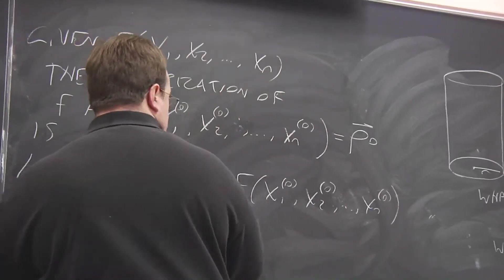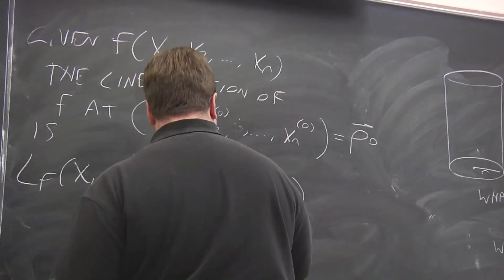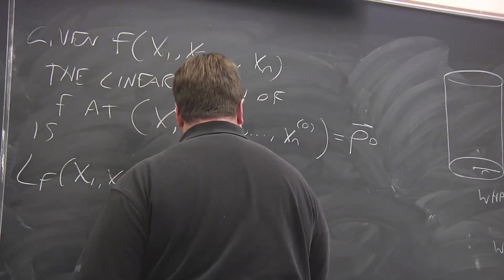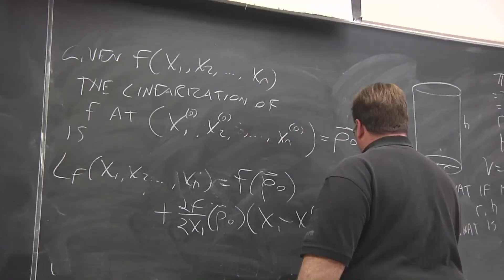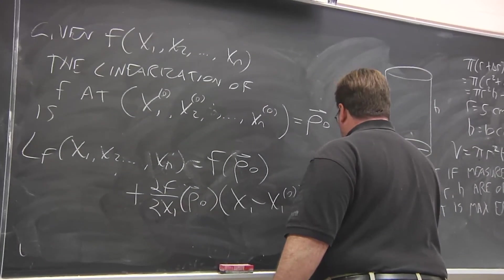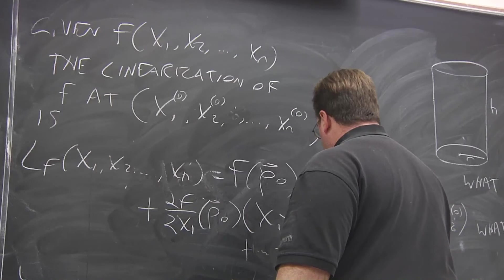And I'm going to use a shorthand here. I'm going to call this vector p naught, just so I don't write quite so much, plus all the partial derivatives evaluated at the same point. So here we have a partial derivative with respect to x₁ times the change in x₁, and then the same for x₂, x₃, and so on, all the way to xₙ.